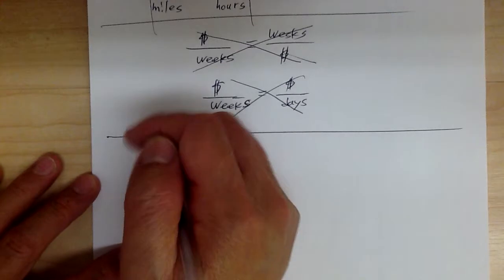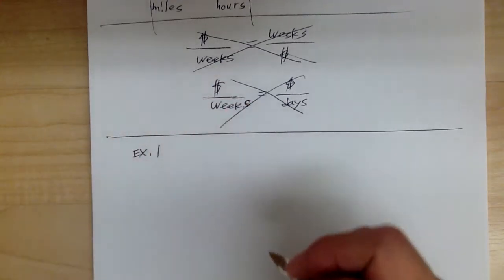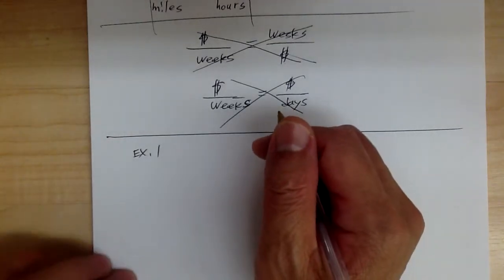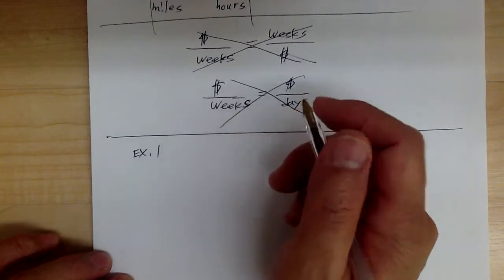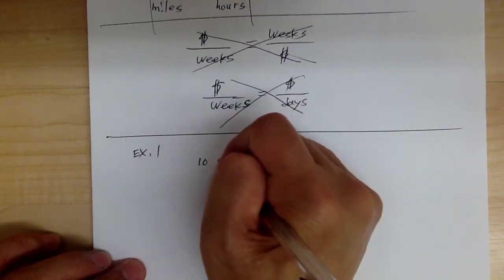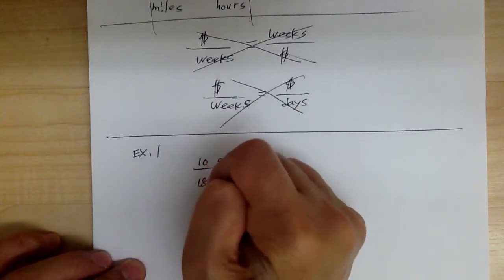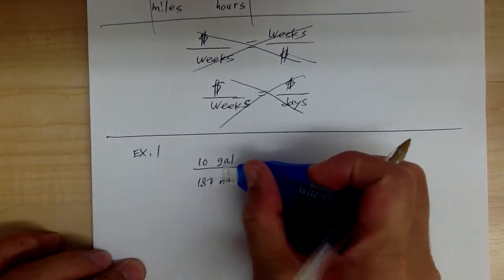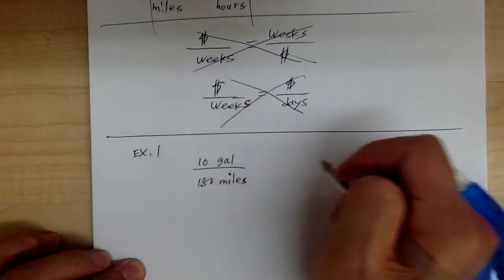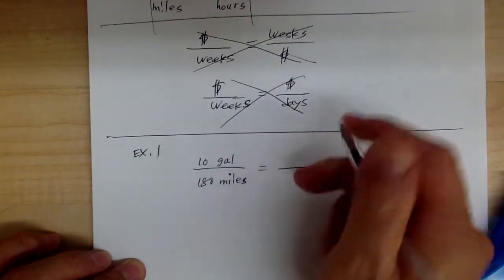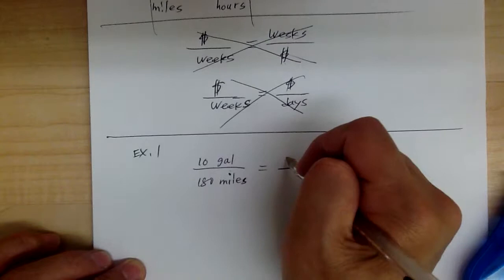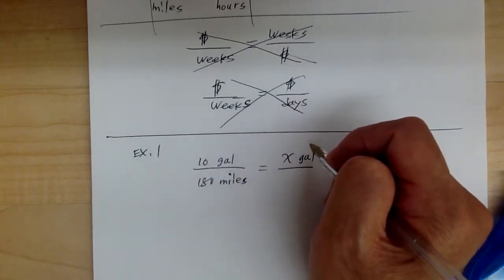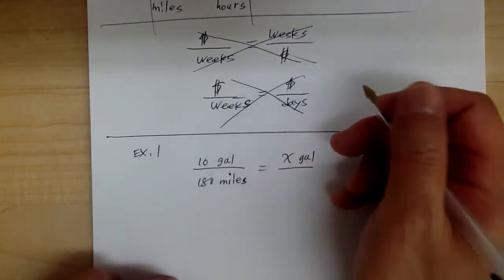Let's go to example one. When you're doing the word problem, you want to write things down as you read. So: a woman used 10 gallons of gas on a 180-mile trip. Write down your label — you've got 10 gallons on 180 miles. And it says how many gallons, so it would be X gallons. How many gallons of gas can she expect to use on a 300-mile trip?